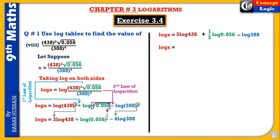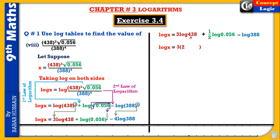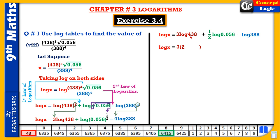Now finding log values. For log 438: the point of reference is after the first digit from the left; there are two digits between point of reference and the decimal (at right extreme), so characteristic is 2. Searching 438 in the log table gives mantissa 64150, so log 438 = 2.64150. The coefficient 3 is written as is.